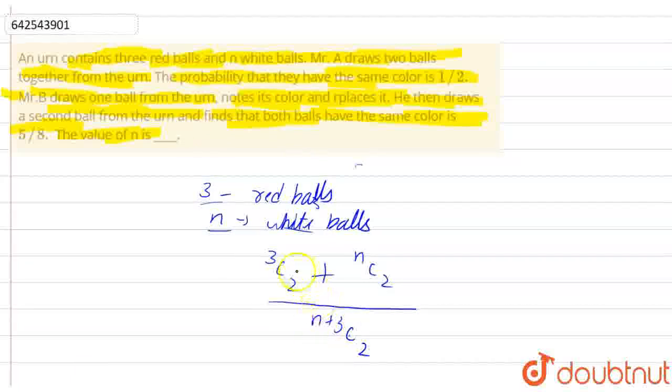Now because total we have n plus 3 balls and we have taken 2 balls, that is why total will be n plus 3C2. Now it is given to us as 1 by 2.